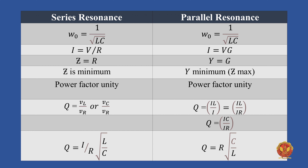In parallel resonance, current is V into G, because you calculate conductance and admittance. In series resonance, the impedance is equal to R. In parallel resonance, the admittance is equal to G.